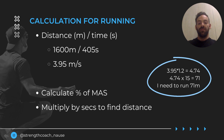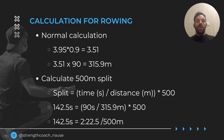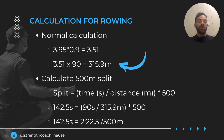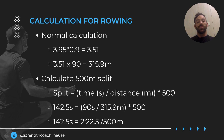For the rowing calculation, it starts off exactly the same — distance divided by time, meters divided by seconds. Sticking with the example of 1600 meters in 405 seconds, my MAS is 3.95. If I want to work for 90 seconds at 90% of that score, I multiply 3.95 by 0.9, giving 3.51 m/s, then multiply by 90 seconds — so I need to travel 315.9 meters in that time. This is where rowing machines are brilliant, because I can calculate the exact split I need to hold.